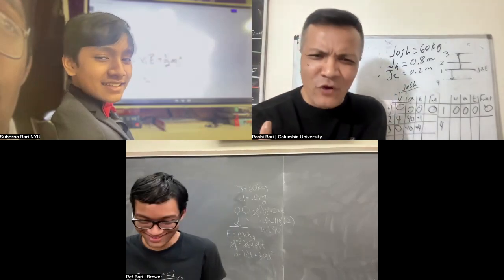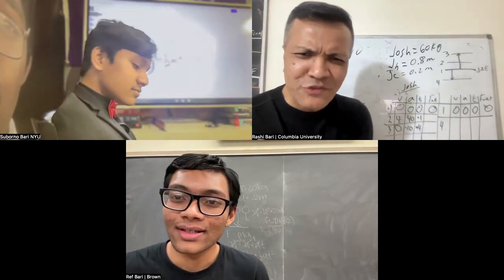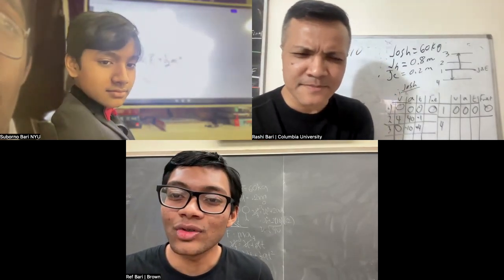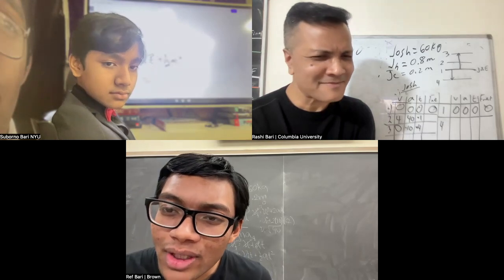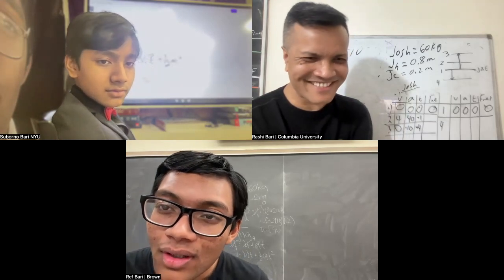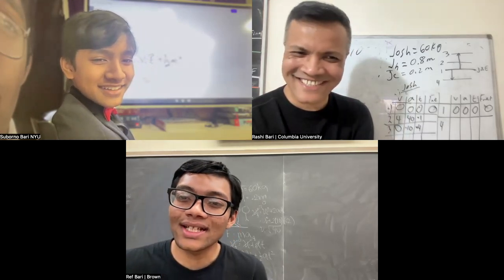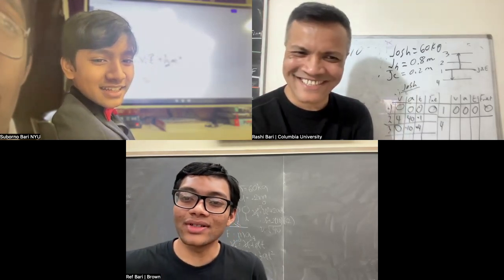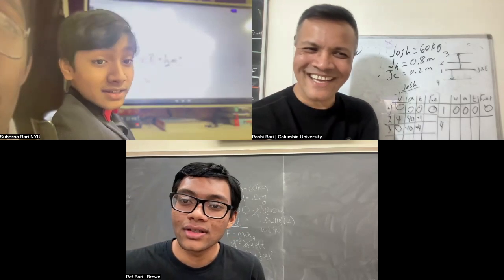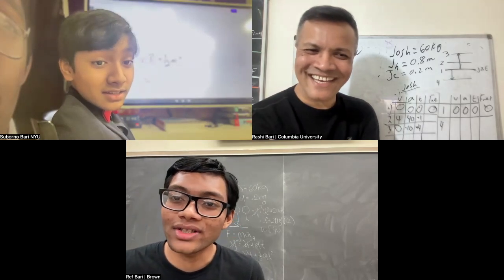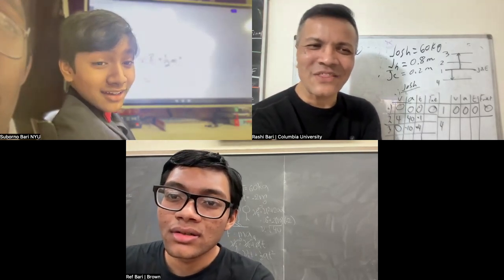What is the net force for Josh at location three? 600, six hundred minus 600 Newtons at location three. Yeah, location three. It's zero.